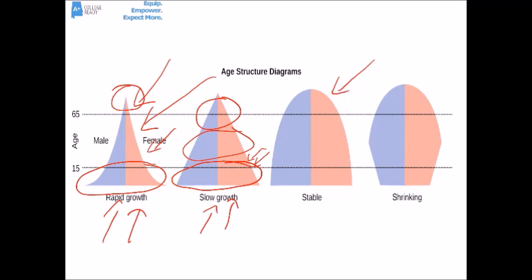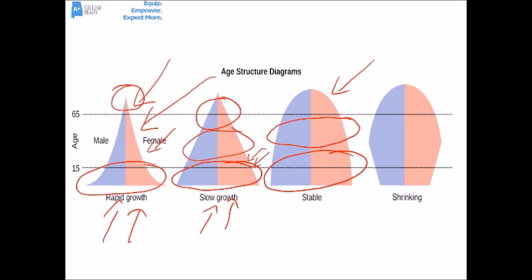Some age-sex structures look more like a cone shape — this might be a place like Italy. Here, there are a lot of people about to be of reproductive age, but also a lot of people about to be non-reproductive, and a small part of the population near death. These cone-shaped structures give you more of a stable, zero population growth situation.